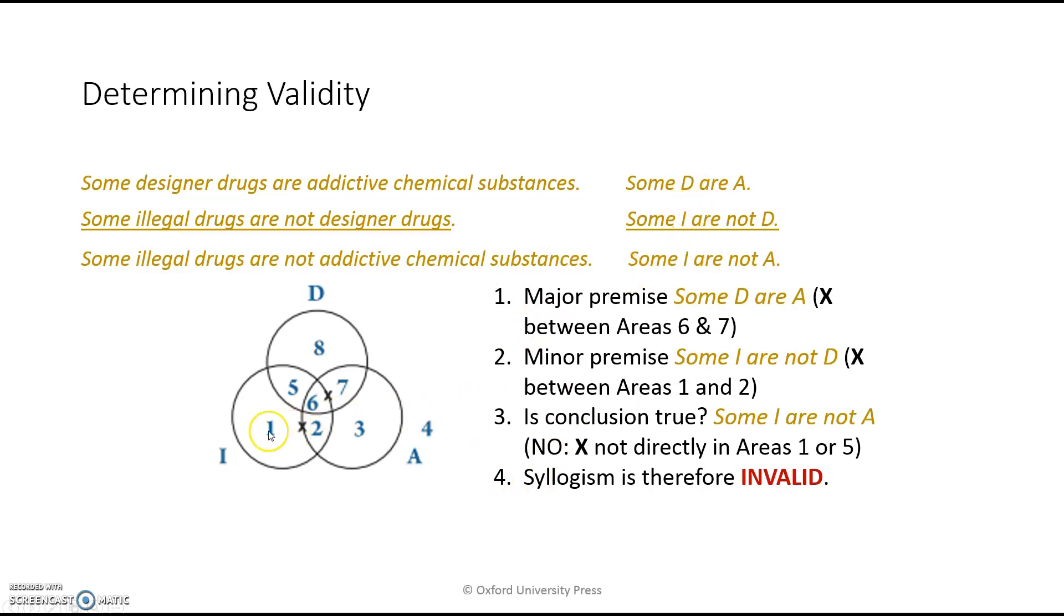Now here's the conclusion. Some I's are not A's. The question we're asking is, is this conclusion necessarily true given what we've drawn here on the diagram? Some I's are not A's. So are we sure that there are I's that are not in the A quadrant? We're not sure of that at all. This X right here is on the line showing that these items could be in 1 or in 2. And if they're in 2, then they are in the A area. So that's entirely possible. If we want to say that some I's are not A's, we'd have to have an X that was only in the 1 quadrant or only in the 5 quadrant. But we don't have that. We've got to overlap here. So it's possible that the conclusion is false. And so the syllogism is invalid.